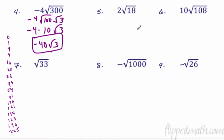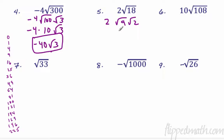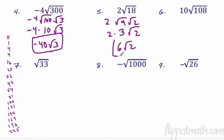How about 2 radical 18? Check 18 on the number line: 16 is not a factor, but 9 is. That 2 is chilling out front. 18 is 9 times 2, and the square root of 9 simplifies into a 3. So it's 2 times 3 with a radical 2 hanging out. What's 2 times 3? It's 6 radical 2. Done.